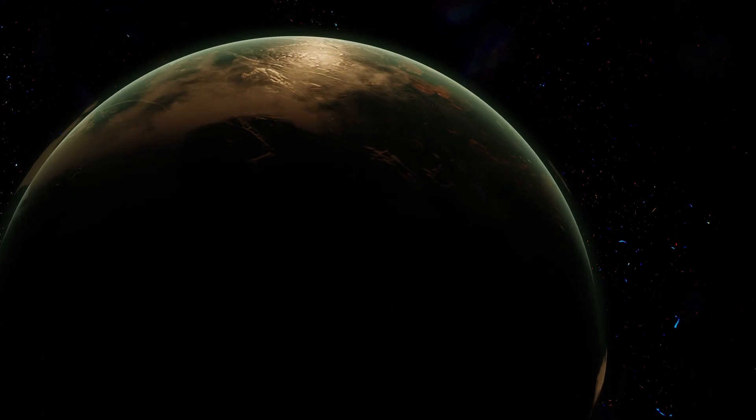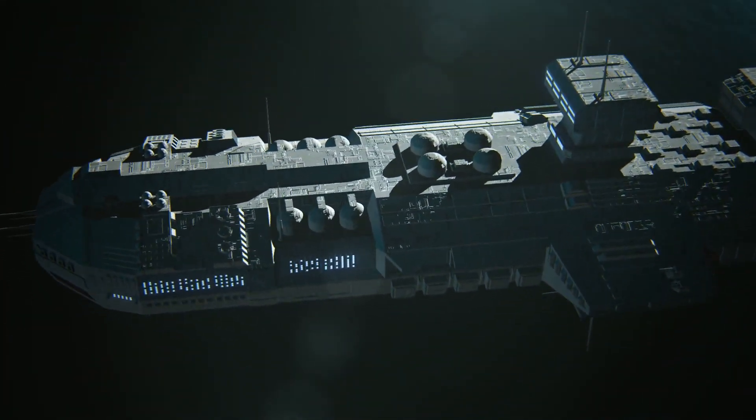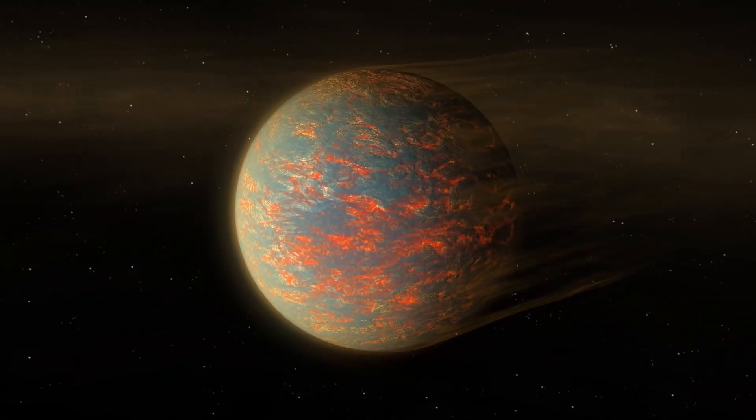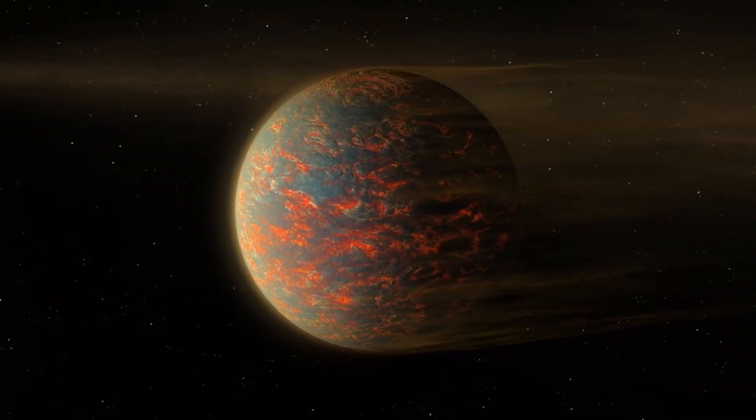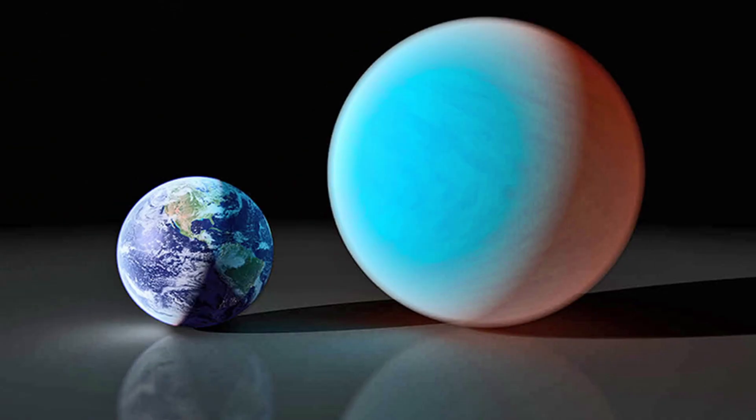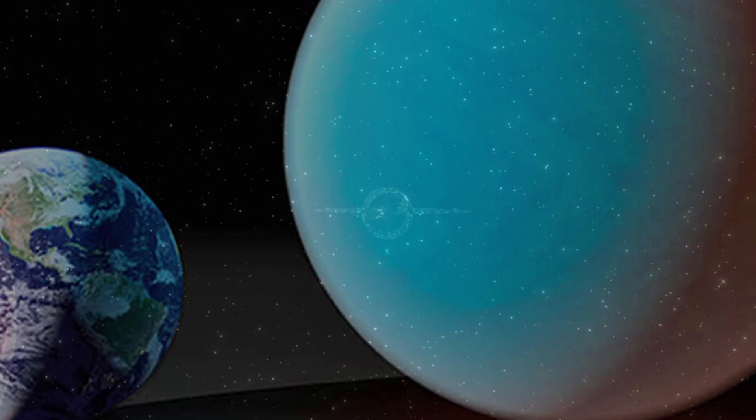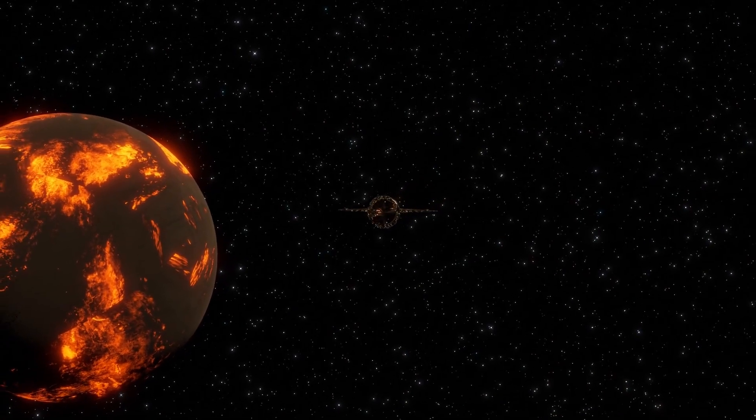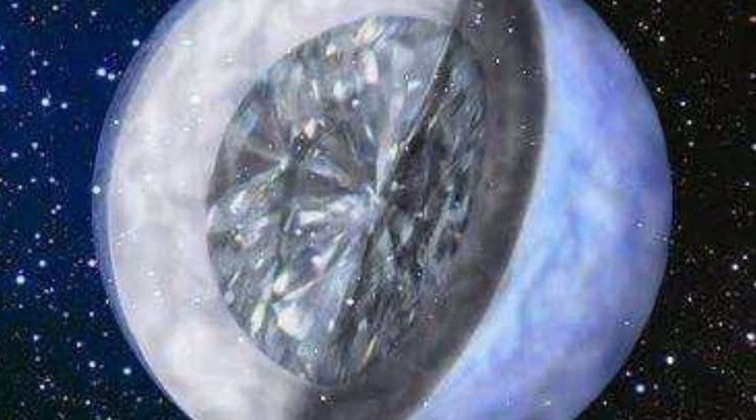The next planet is 55 Cancri e, located 40 light years away from Earth in the constellation of Cancer. 55 Cancri e is a super-Earth, also known as Diamond Planet, with a diameter of 23,891 kilometers. The planet is worth $26.9 million because the core of the planet is full of diamonds.